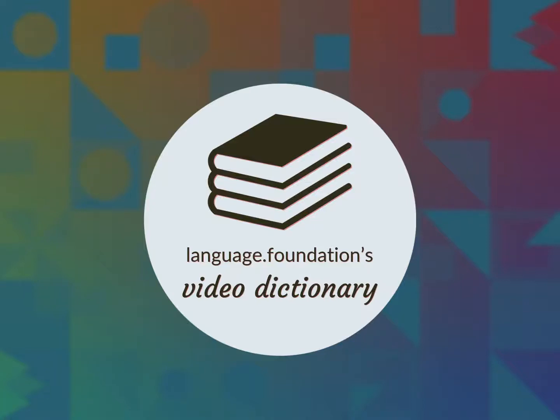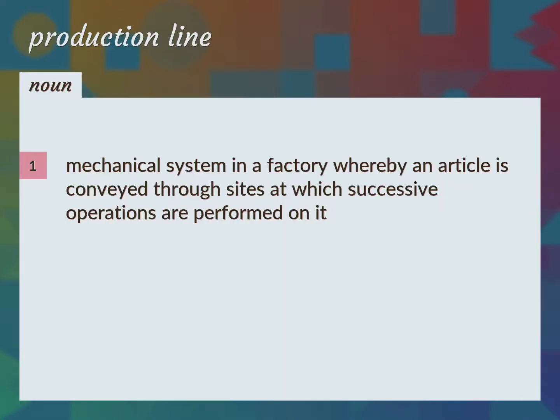Language.Foundation's Video Dictionary, helping you achieve understanding. Mechanical system in a factory whereby an article is conveyed through sites at which successive operations are performed on it. Assembly line.